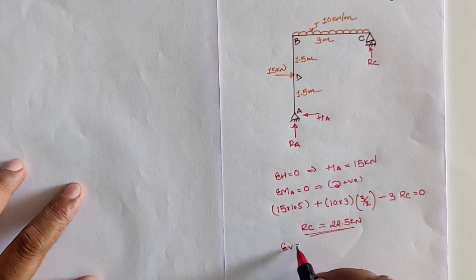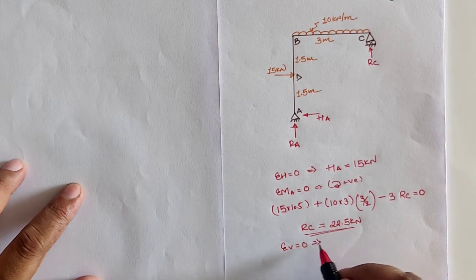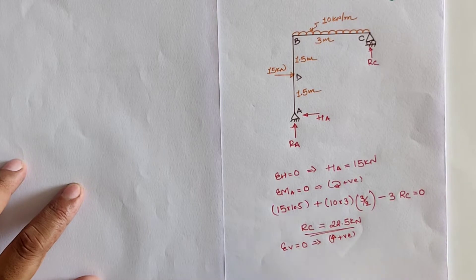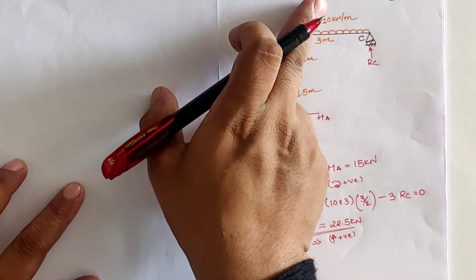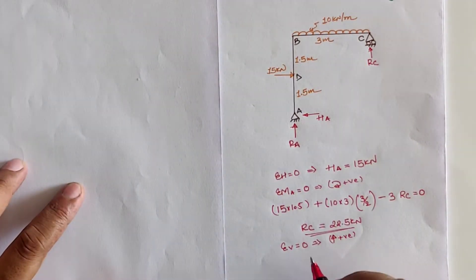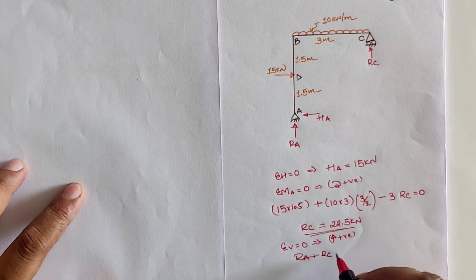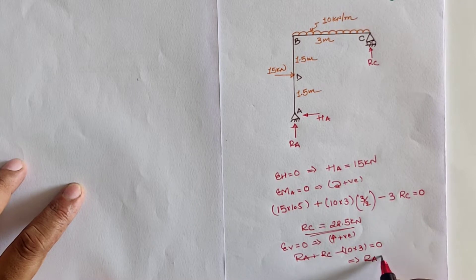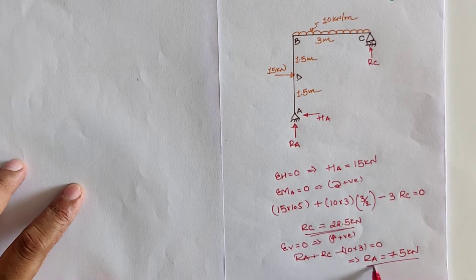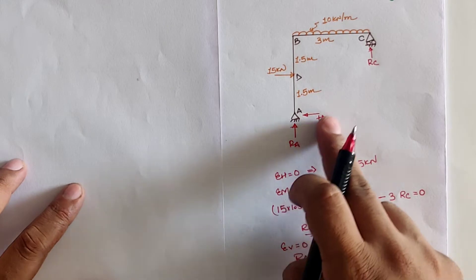Taking the third equilibrium condition, sigma V equal to zero, with upward loads as positive: RA + RC − 10 × 3 = 0. Substituting RC = 22.5 kilonewton, we get RA = 7.5 kilonewton. So the first step for any determinate frame analysis — finding all reactions — is complete.